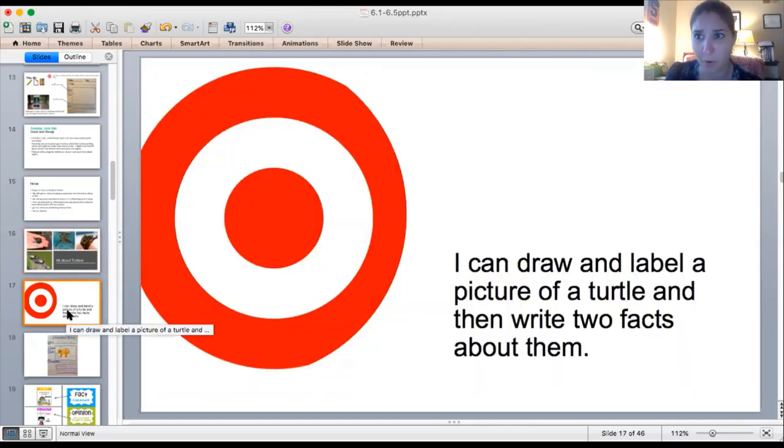Let's read our learning target before we get started. Our learning target today is I can draw and label a picture of a turtle and write two facts about them. That's what we are going to do today.